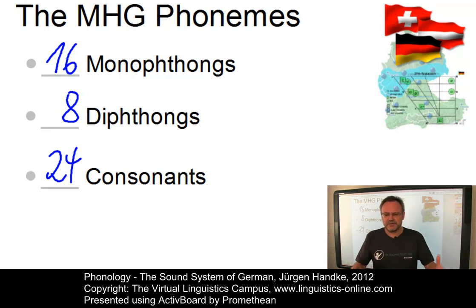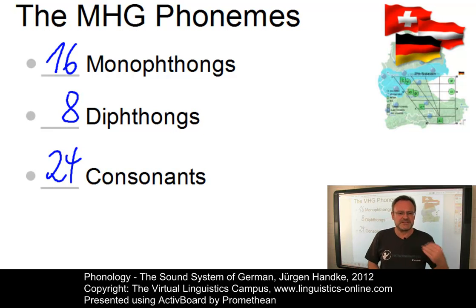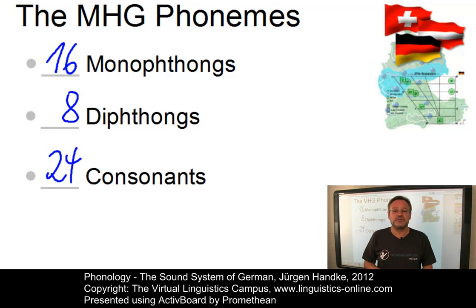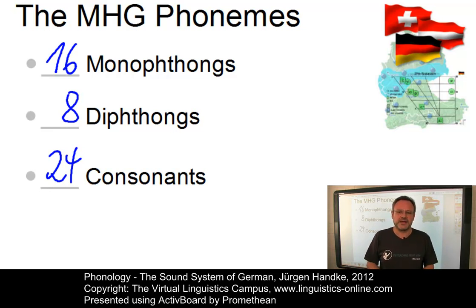The monophthongs can be subdivided into long or short, or more precisely into tense and lax. Tense vowels involve a greater muscular energy during articulation, and lax vowels involve relatively little muscular energy during articulation. Since the tense monophthongs are generally longer than the lax ones, the colon is normally added in their transcription.